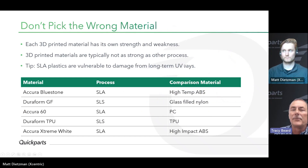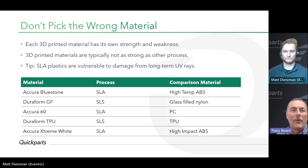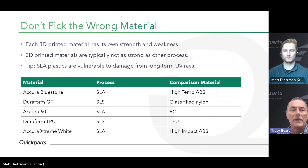Don't pick the wrong material. There's a wide range of 3D printed materials to choose from, each with their own strengths and weaknesses. We really tell people to research which material has the best properties for their particular application. While most 3D printed materials are not as strong as their production counterparts, there have been a lot of recent advancements in durability and UV stability that have made them a good source for not only prototypes but also low-to-medium quantity production end-use parts.